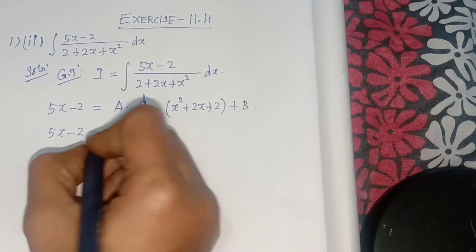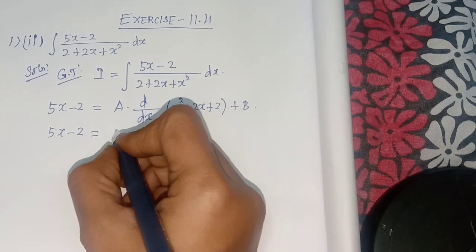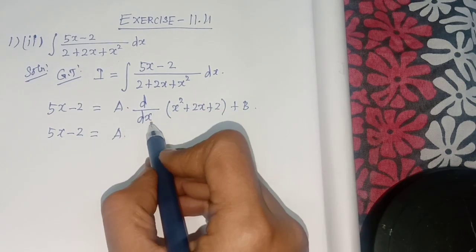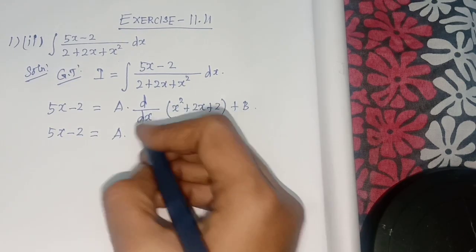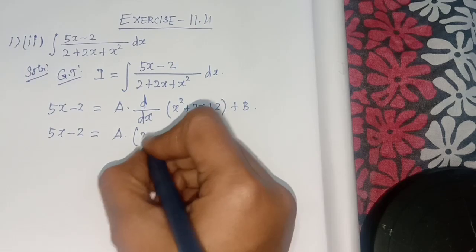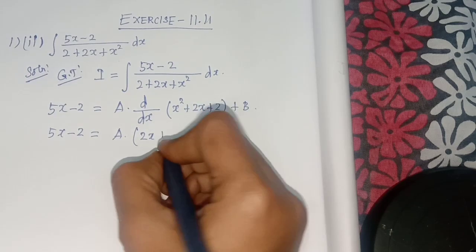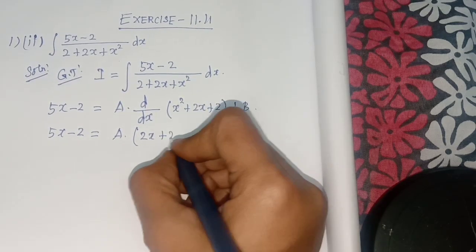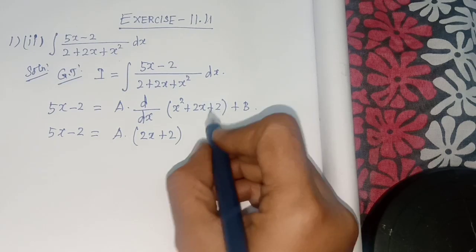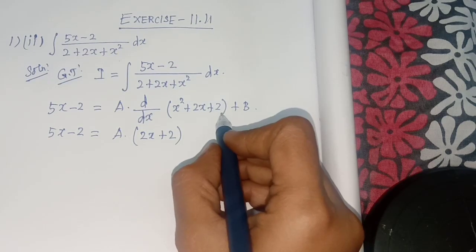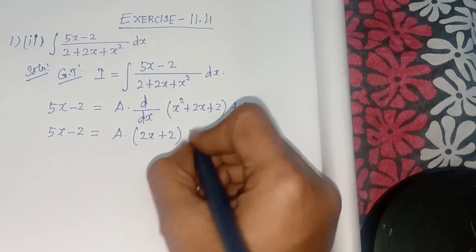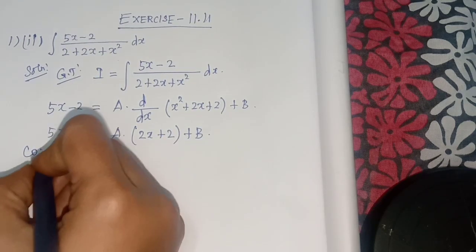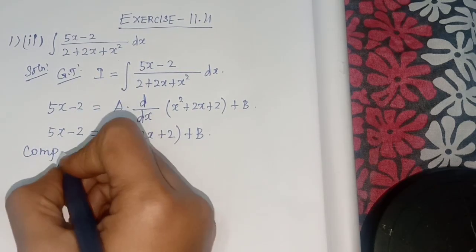Differentiating x squared plus 2x plus 2 gives 2x plus 2, and the constant 2 differentiates to 0. So 5x minus 2 equals A times (2x plus 2) plus B. Now comparing the coefficients of like terms.